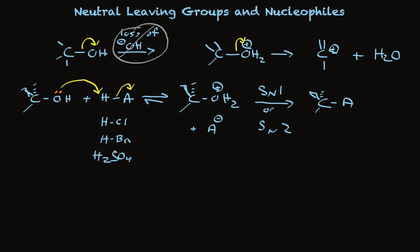For now the point is that a very poor leaving group, the OH of an alcohol, can be transformed into a very good leaving group, the protonated OH of an alcohol, which then undergoes SN1 or SN2 chemistry.